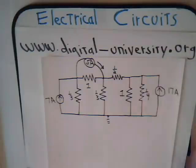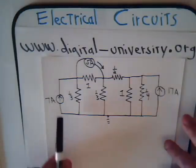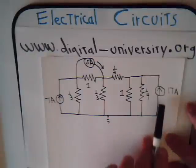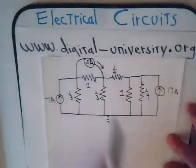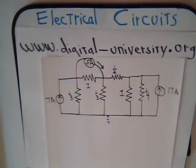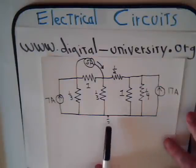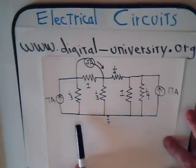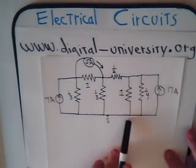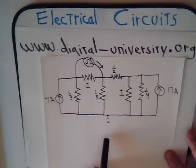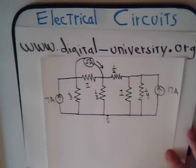We see we have nothing but current sources: 7 amps, 17 amps, and 5 amps. The bottom part of the diagram is just one node — all of these lines simply funnel into one point, so there's one node at the bottom of the circuit.